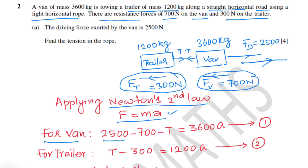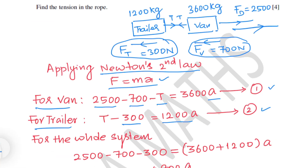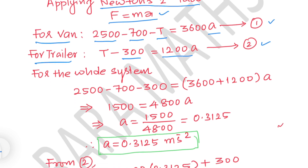For the van: driving force 2500 minus resistance 700 minus tension T equals 3600a. For the trailer: T minus resistance 300 equals 1200a. For the whole system, driving force minus total resistance 700 plus 300 equals total mass 3600 plus 1200 times a, giving 1500 equals 4800a.